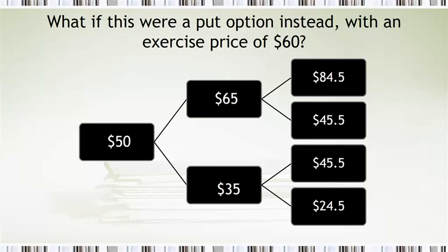And if this were a put option instead with an exercise price of 60, then we've got a different scenario. Because this gives us an option to sell it at 60, and if it's below that, that would be attractive. So we take the same stock price scenario, and we work differently in terms of the valuation.